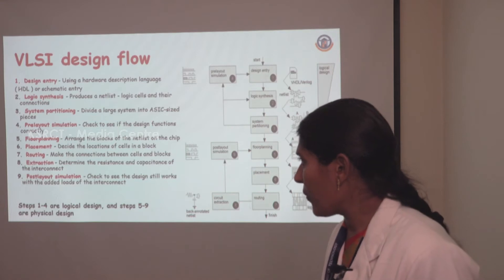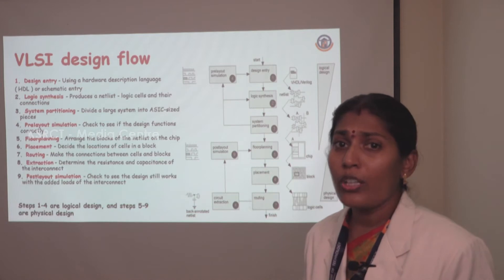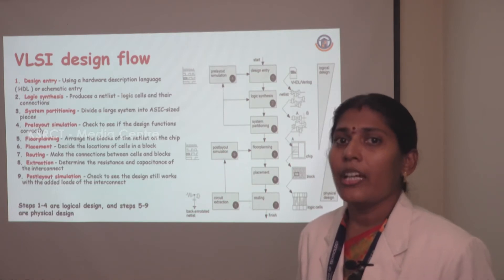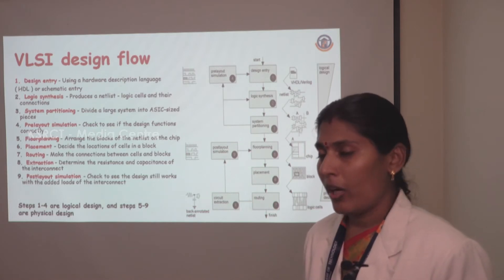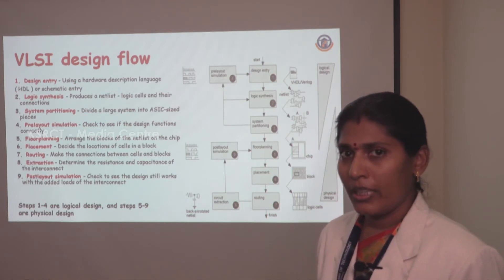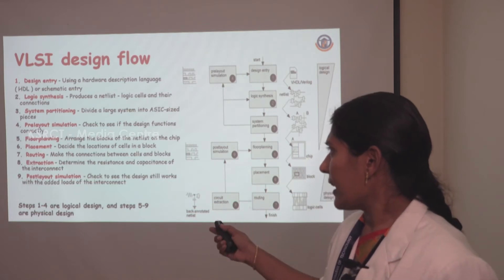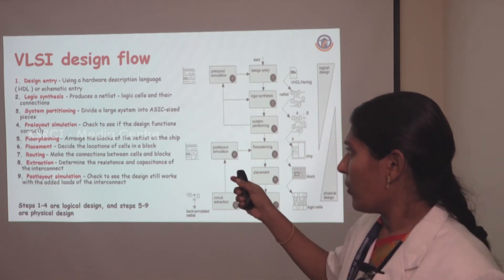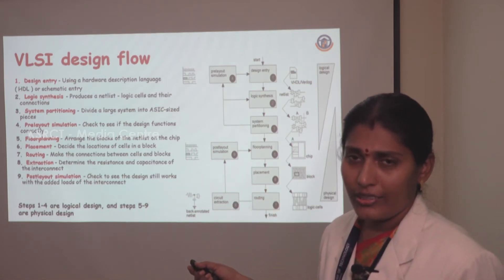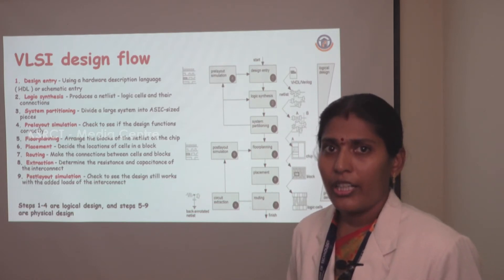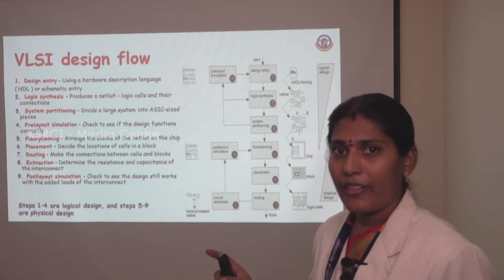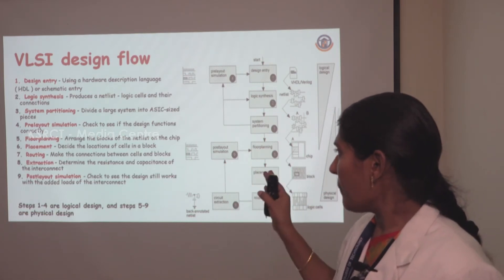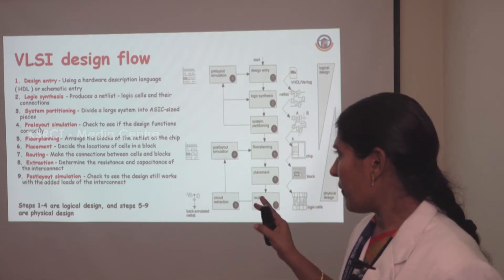Next is system partitioning. Before entering into floor planning, our whole circuit is divided into smaller sub-circuits so we can check all kinds of outputs of our designed circuit in parallel. The next step is pre-layout simulation. Before entering the floor plan step, we check the simulation of our design to verify whether we meet our requirements. If not, we go back to the design entry step.